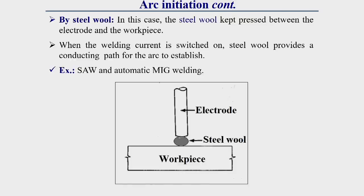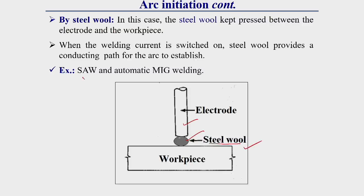The steel wool technique places steel wool between the electrode and workpiece. When the welding current is switched on, the steel wool — consisting of small chips of steel, a conducting material — provides a conducting path for the arc to establish. This technique is widely used in submerged arc welding and MIG (GMAW) welding.